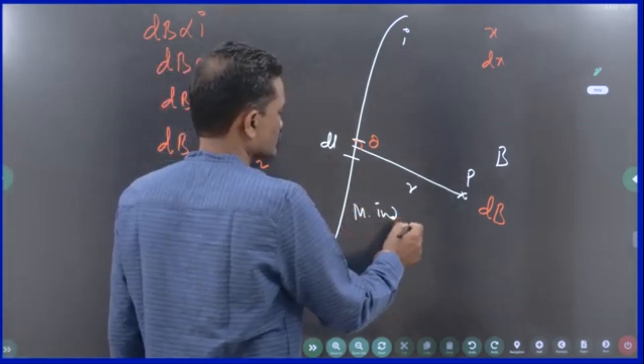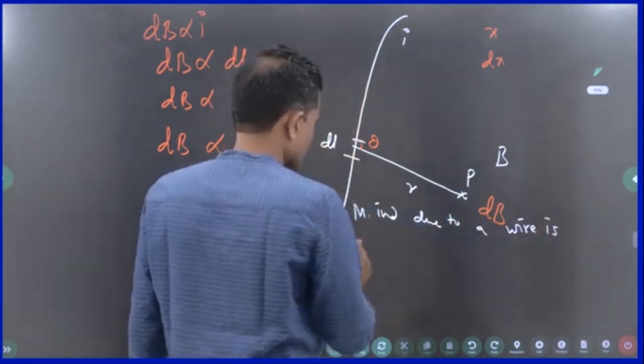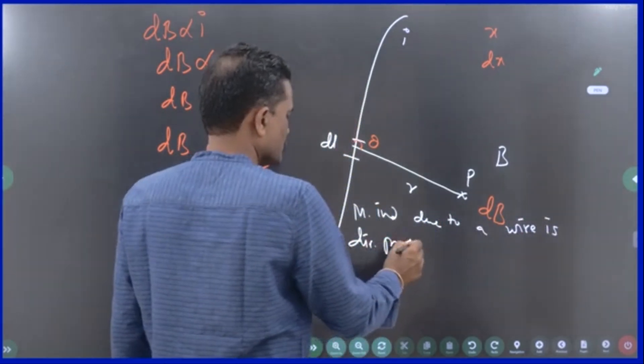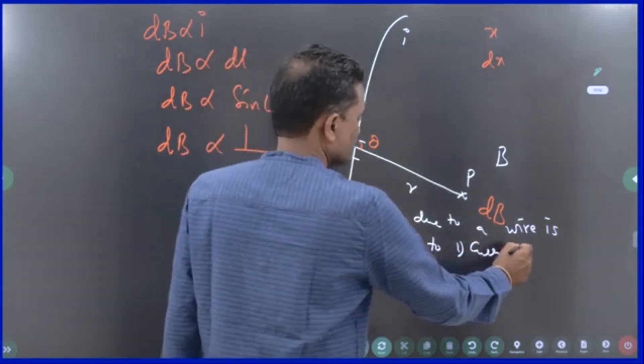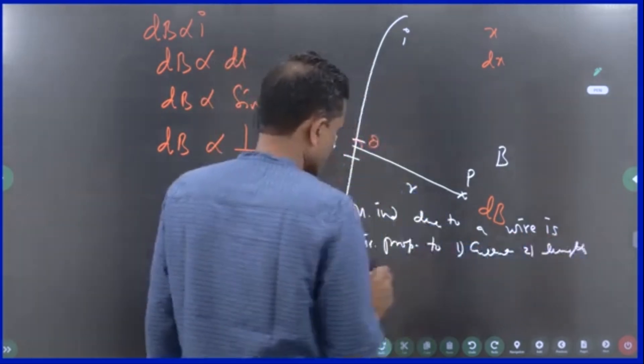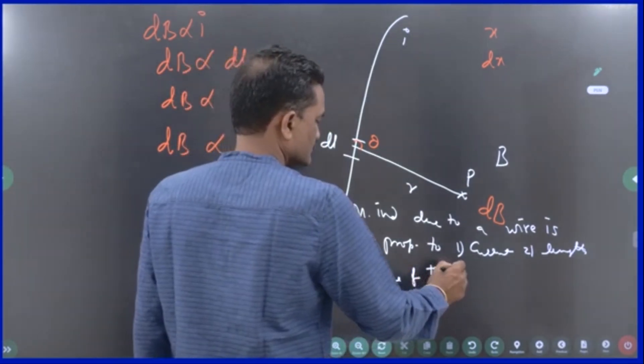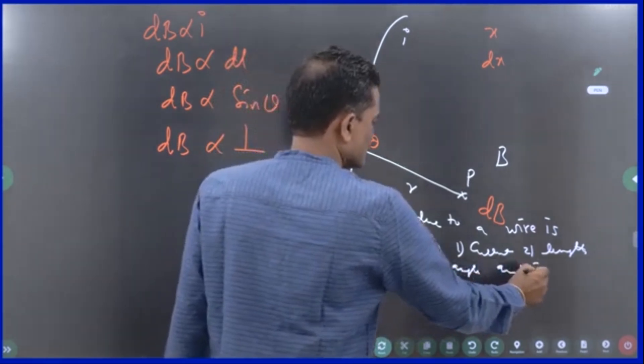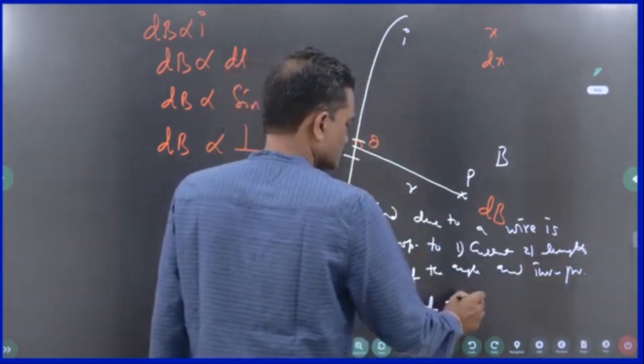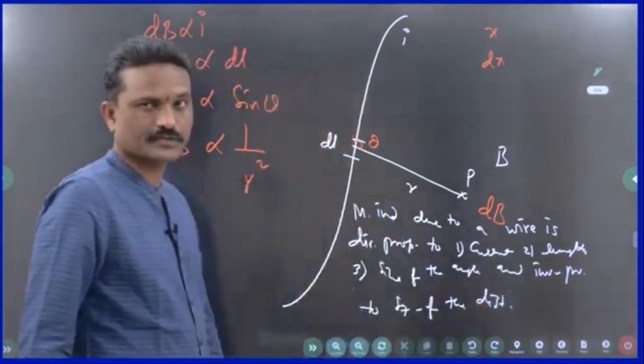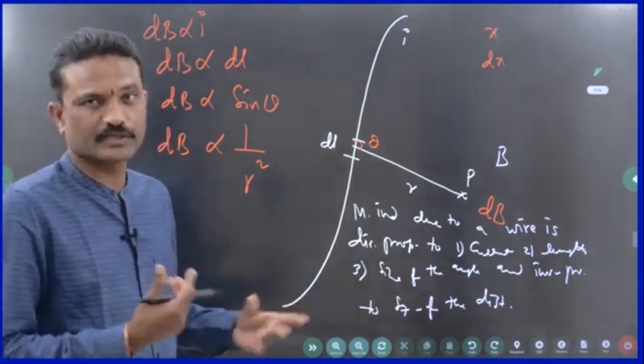Magnetic induction due to a wire is directly proportional to one, current; two, length; and third, sine of the angle; and inversely proportional to square of the distance. That is all. If you write this, you will be getting one mark. If you draw the diagram, it will be an added advantage. You will be impressing the examiner.